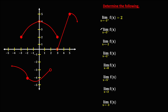Then for this limit, the limit of f of x as x approaches positive 3 from the left. This is x equals positive 3, and there are two coordinates. Since we are approaching from the left, the limit is equal to positive 2.